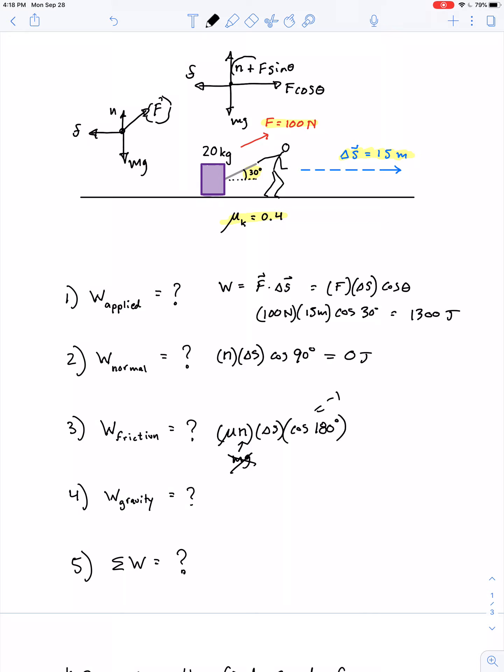So the normal force added with F sine theta is equal to mg. Or in other words, the normal force is equal to mg minus F sine theta. And that makes sense, right? We're subtracting something because if you pull somewhat upward on the string, that's going to make the contact between the suitcase and the ground a little less than what it would typically be.